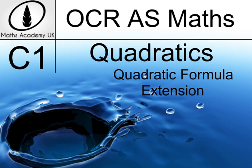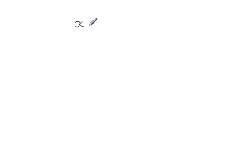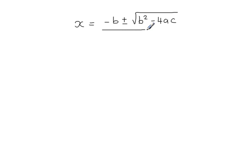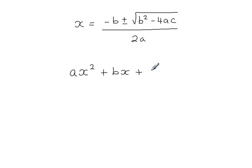In this video, we have a look at where the quadratic formula comes from. The quadratic formula is x equals minus b plus or minus the square root of b squared minus 4ac, all divided by 2a. The a, b, and c come from ax squared plus bx plus c equals 0.